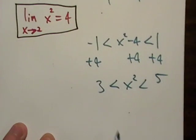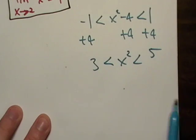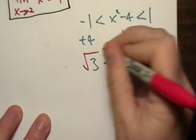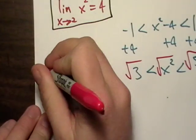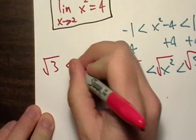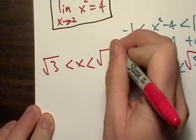Okay, I want to get x by itself. So what I'm going to have to do is take the square root of each one of these things. And that's going to leave me with square root of three being less than x, being less than the square root of five.